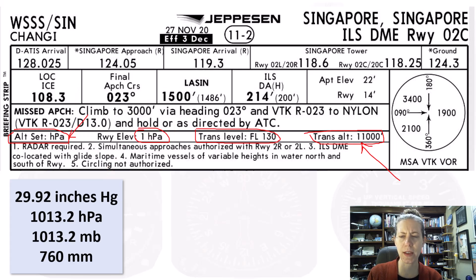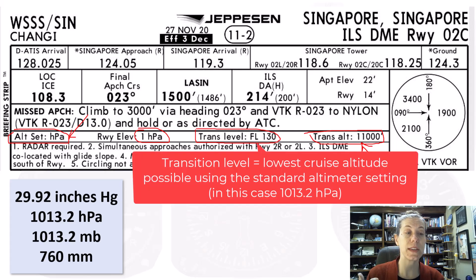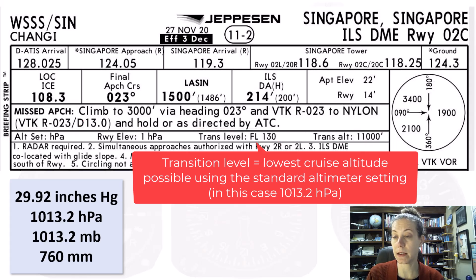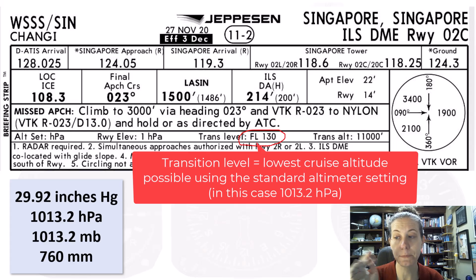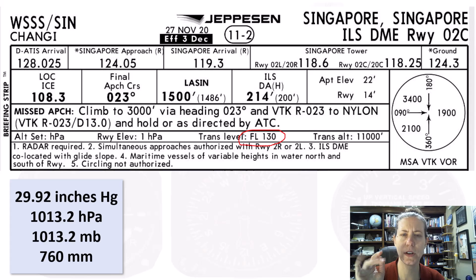What is trans level then? Because it's a different number here. That is the lowest altitude where you can cruise using the standard altimeter setting. So in this case, we would be using the standard of 1013.2 hectopascals. Using that set in my altimeter, I could cruise as low as flight level 130. In the U.S., our transition layer is right at 18,000 feet.